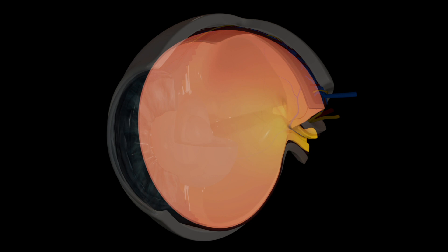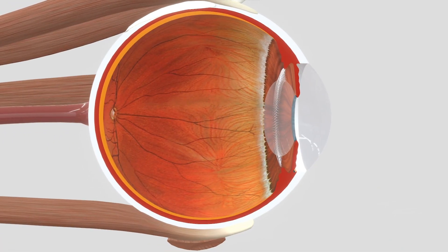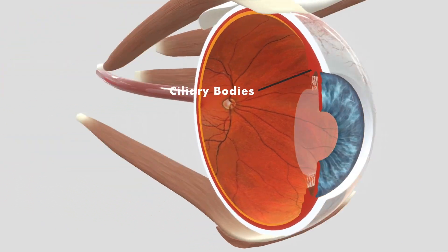The middle layer of the human eye is vascular in nature due to the presence of blood vessels. The middle layer contains choroid, ciliary bodies, and iris.